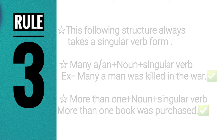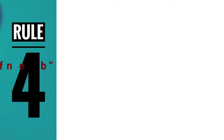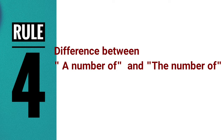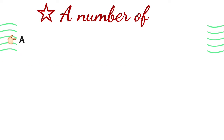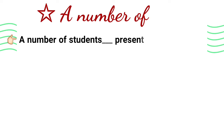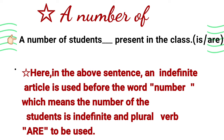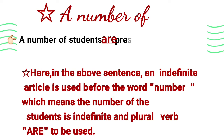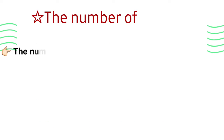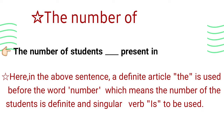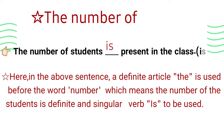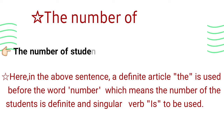The fourth rule covers the difference between 'a number of' and 'the number of.' 'A number of students are present in the class' — here the indefinite article 'a' makes the count indefinite, so it takes plural verb form. But 'the number of students is present in the class' — the definite article 'the' makes it definite, so it takes singular verb form.